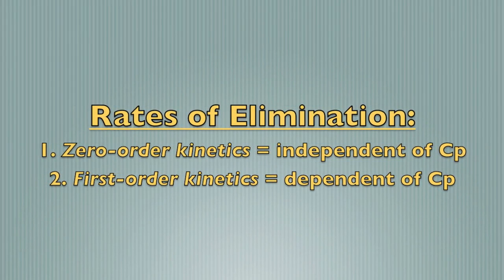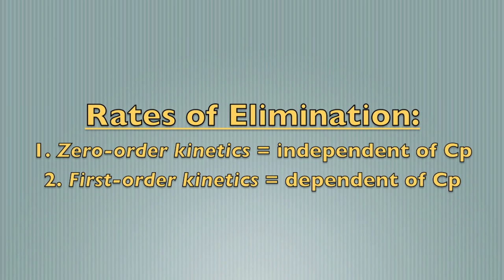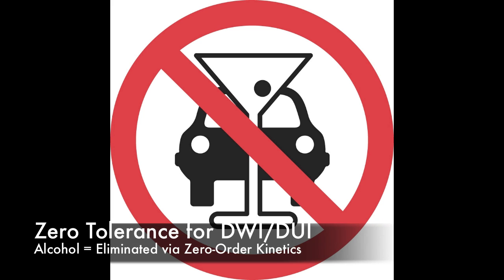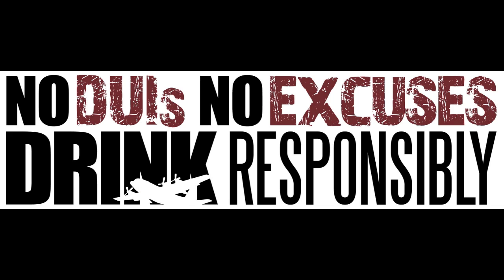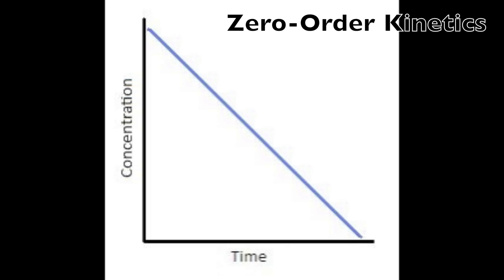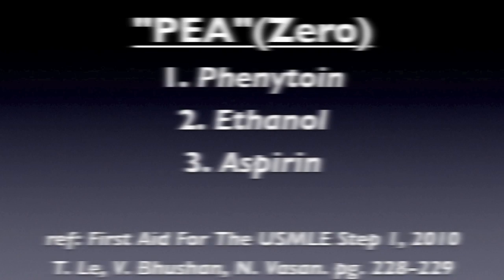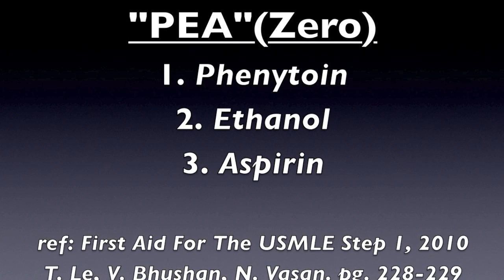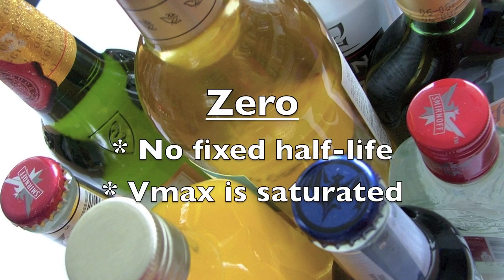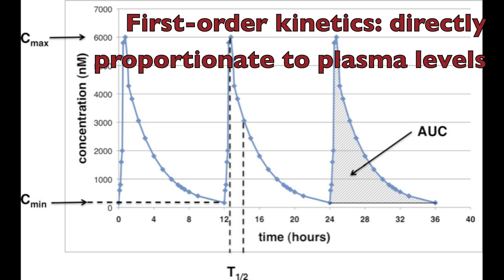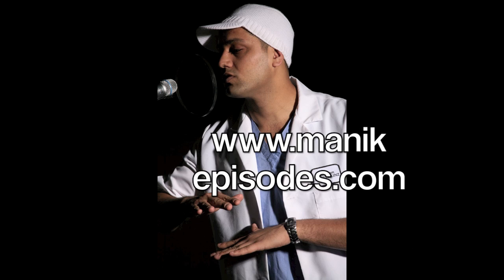Two different types of rates of elimination — independent, independent, applies to concentration. If you know the difference between zero and first order, there's zero tolerance. If you get drunk and get pulled over, the fastest way from point A to B is walking a straight line — only a constant amount eliminated over time. Phenytoin, ethanol, and aspirin are zeros — no fixed half-life, maxed and saturated. But most drugs are first order — eliminated directly proportional to plasma levels. Now refresh yourself with a warm cup of basic trouble.